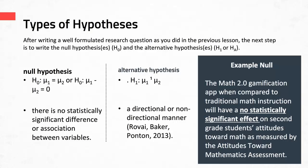Most journals, faculty members, and universities require that every research question has a stated null hypothesis, especially in a research proposal. However, alternative hypotheses are sometimes not required — sometimes they're optional. But you need to know that every research question has at least one null hypothesis and one alternative hypothesis.